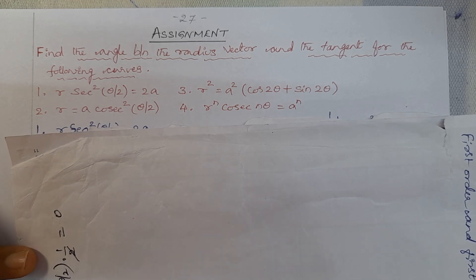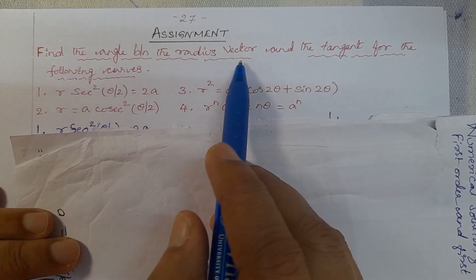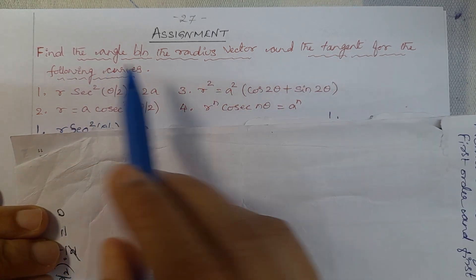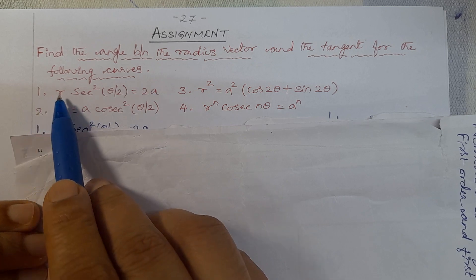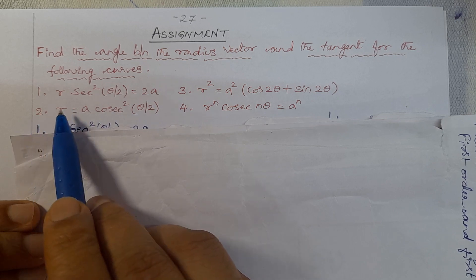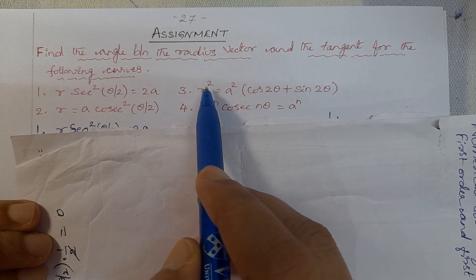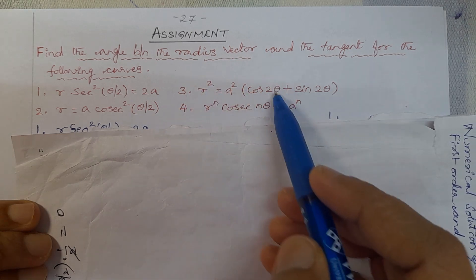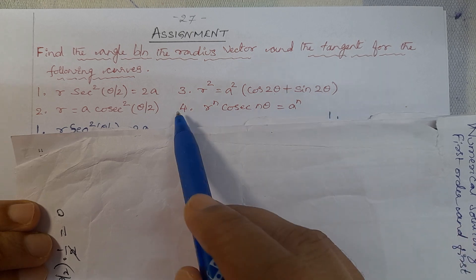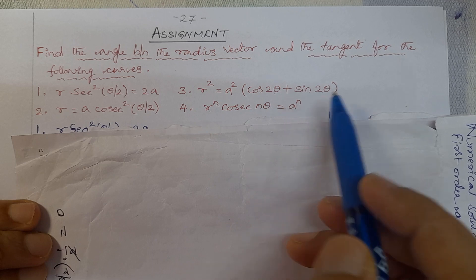Namaste. Engineering Mathematics Module, Differential Calculus 1. Assignment Problem: Find the angle between the radius vector and the tangent for the following curves. First problem: R·sec²(θ/2) = 2a. Second problem: R = a·cosec²(θ/2). Third problem: R² = a²(cos2θ + sin2θ). Fourth problem: Rⁿ·cosecⁿ(nθ) = aⁿ.